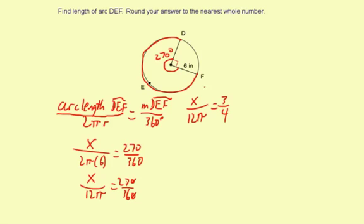So now I'm going to cross-multiply to solve. 4 times x is 4x, equals, and 12π times 3 is 36π. Divide both sides by 4. x equals, 36 divided by 4 is 9π.